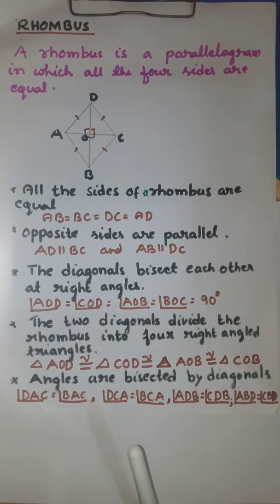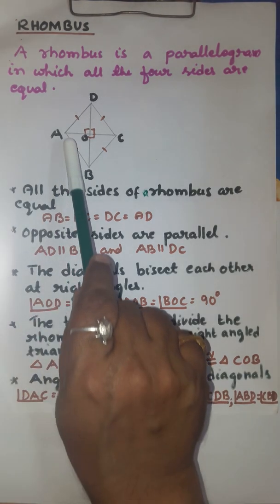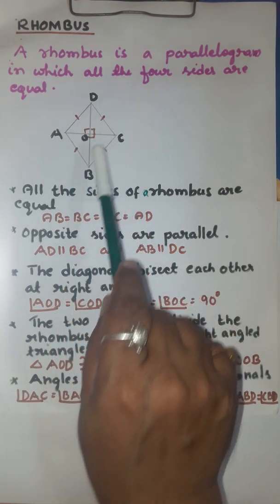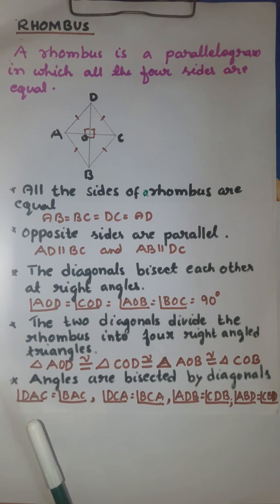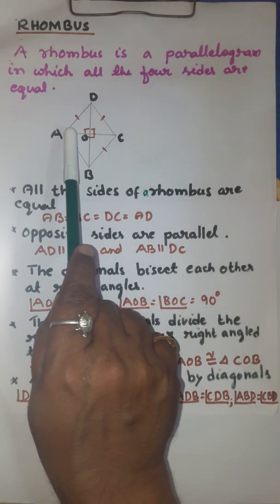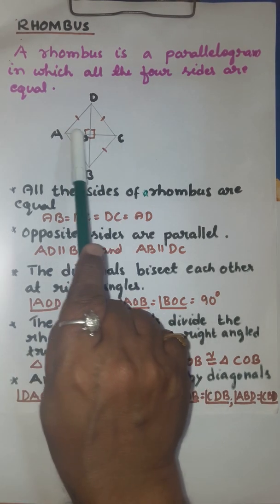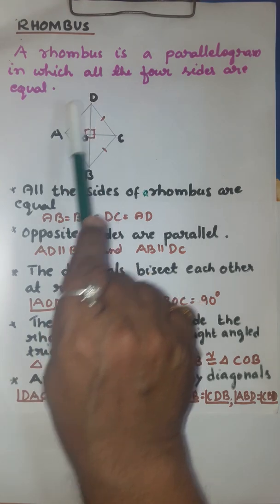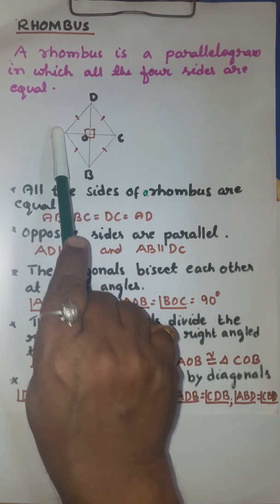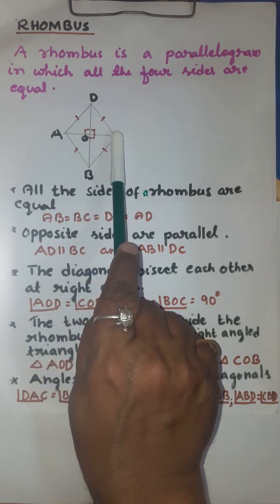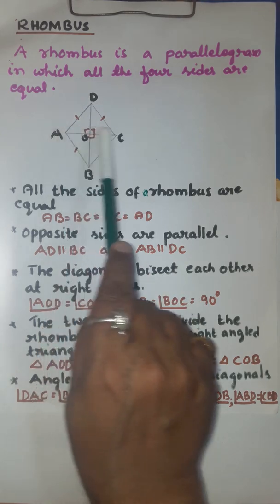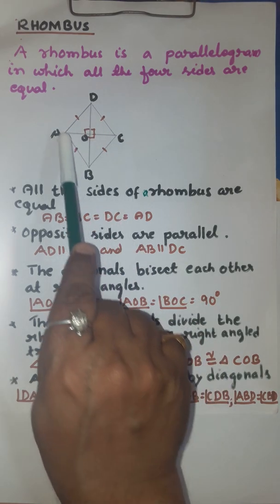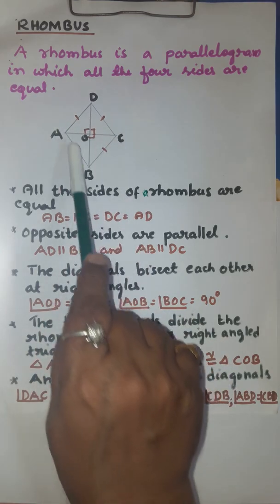The angles are bisected by the diagonals. You can see the four angles A, D, C, and B are bisected by the diagonals. Diagonal AC bisects angle DAB into two equal angles: angle DAC and angle BAC. So angle DAC is equal to angle BAC. On the other side, angle DCB is bisected by the same diagonal AC into two bisected angles: angle DCA is equal to angle BCA.